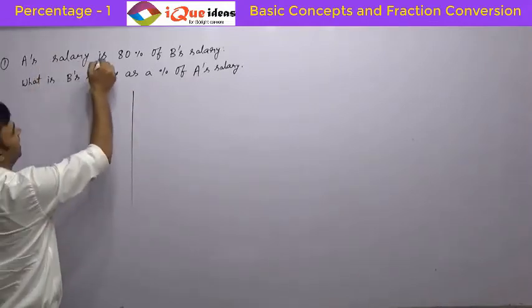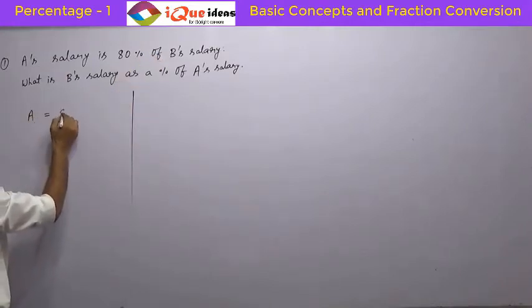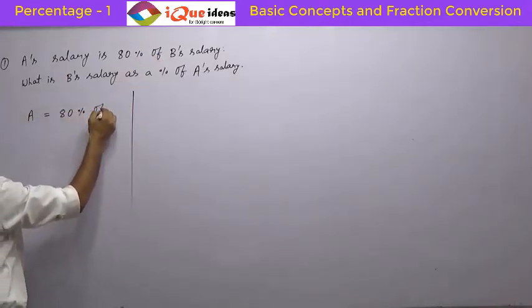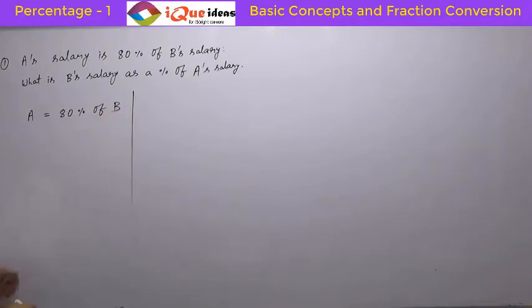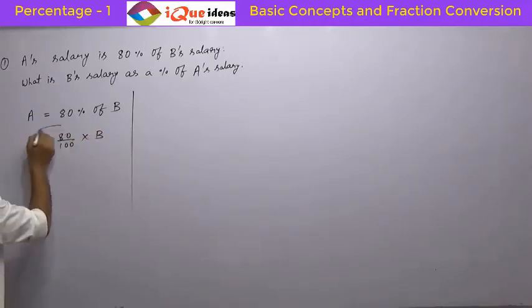When I say A's salary is 80% of B's salary, that means A is equal to 80% of B. This means A is equal to 80 by 100 into B.